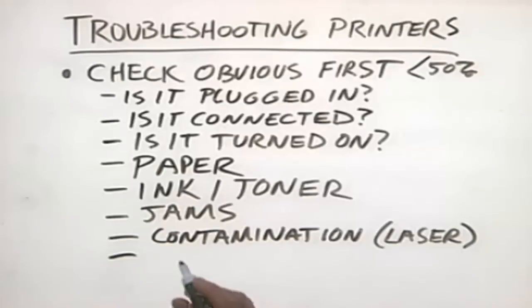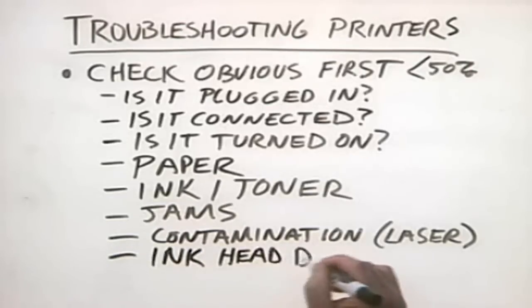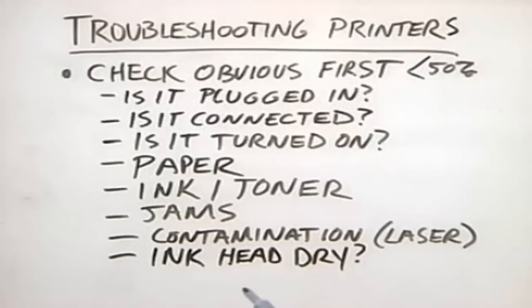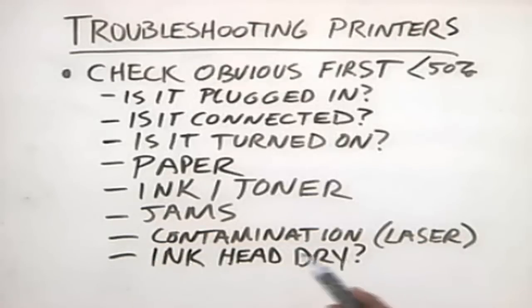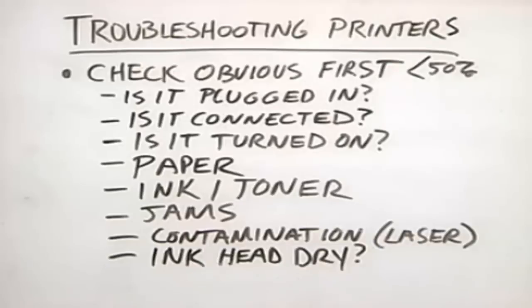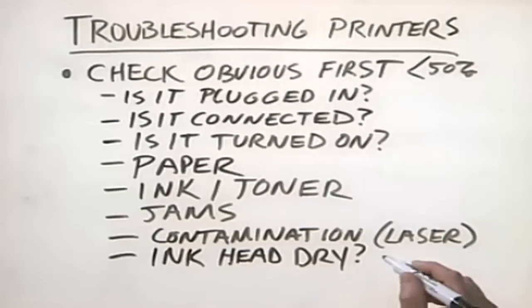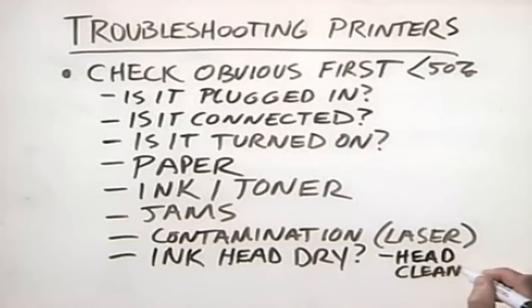If you're dealing with an inkjet printer, is the inkhead dry? An inkjet printer works by conducting an electrical current through little jet ports inside of the inkhead, which causes a bubble to form inside of the ink, forcing ink out of the nozzle and onto the paper. Most good inkjet printers have a routine that will clean out those heads whenever you shut the printer off. However, some don't. If the printer sits for a long period of time, you could end up with dried ink inside the nozzles, resulting in blank lines or missing colors. Most inkjet printers have a head-cleaning routine you can run to clean out the dry ink.